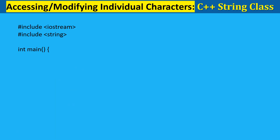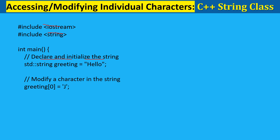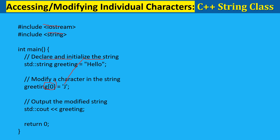Now, modifying individual characters in C++. Include iostream and the string library. Declare and initialize the string: string greeting = "hello". We access the first character at index 0 of greeting and change it from 'h' to 'j'. This operation modifies the original string from "hello" to "jello". Since the standard string is mutable, we can change characters in place. Output the modified string — cout prints the modified value of greeting to the console. The output will be "jello".